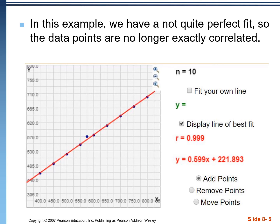Let's add a 10th point — it's going to be this point right here — and this point is not on the line. It's a little bit above it and it's actually going to pull the entire red line up just a little bit. Now that red line doesn't go through any of the points. We still have an extremely strong correlation; the r value is 0.999, so it's not quite one anymore, and our equation has changed just slightly.